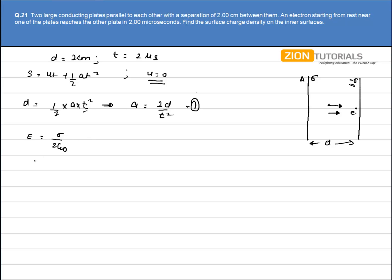So the net electric field in this direction is given by sigma by 2 epsilon not plus sigma by 2 epsilon not and that comes out to be sigma by epsilon not. This is the electric field existing between the two plates and since if this is the electric field then a force will act on the electron that will be equal to QE.